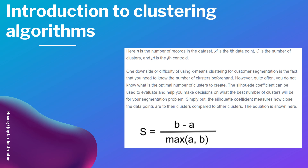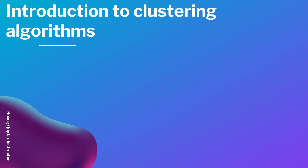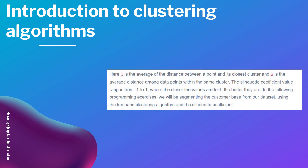Simply put, the silhouette coefficient measures how close the data points are to their own cluster compared to other clusters. The equation is: s equals b minus a, divided by the max of a and b. Here, b is the average distance between the point and its closest neighboring cluster, and a is the average distance among the data points within the same cluster. The silhouette coefficient value ranges from negative one to one, where the closer the values are to one, the better. In the following programming exercises, we will be segmenting the customer base from our dataset using the k-means clustering algorithm and the silhouette coefficient. That's all for this video — I'll see you in the next one.